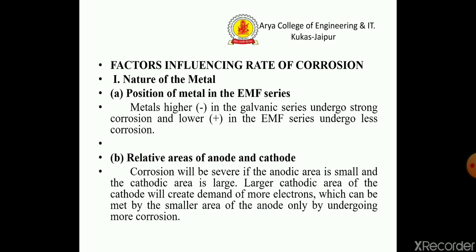The first factor influencing rate of corrosion is the nature of metal. First, the position of metal in the EMF series: metals higher in the galvanic series undergo strong corrosion, and metals lower in the EMF series undergo less corrosion. The second is the relative areas of anodic and cathodic regions — corrosion will be severe if the anodic area is small and cathodic area is large.